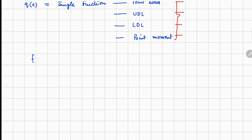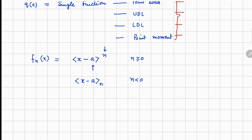In singularity functions we express the function using angle brackets with two parameters a and n. Here a is the location where the force is applied, and n tells us the nature of the force — whether it's a point load or a distributed load. If n is positive we write it as a superscript; if n is negative we write it in the subscript.